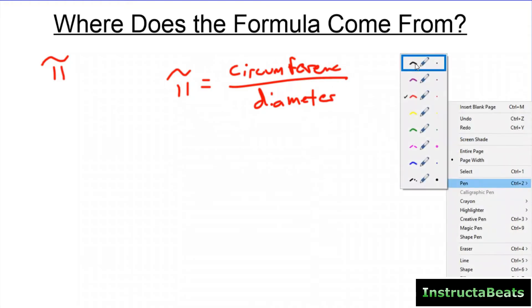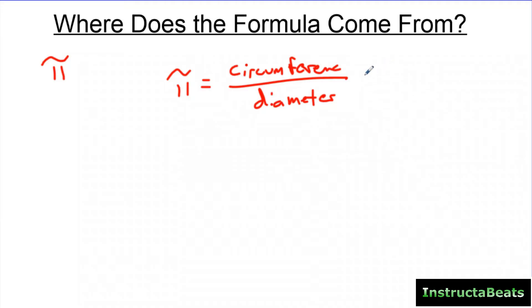All we're going to do is we're going to use some algebra here. So if we know that pi is circumference divided by the diameter, all we have to do is solve and get circumference by itself.